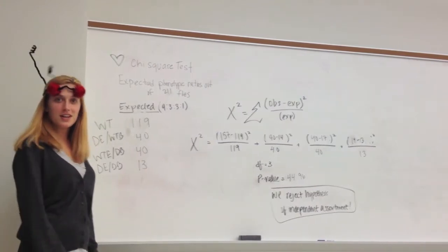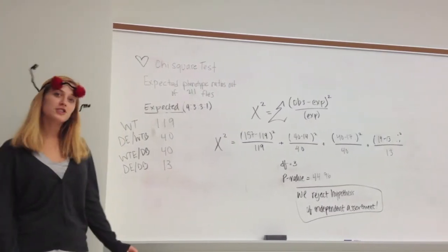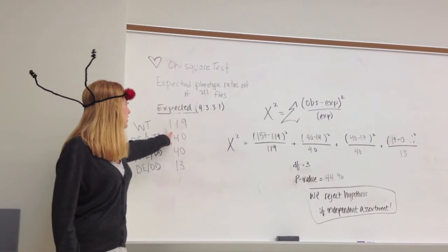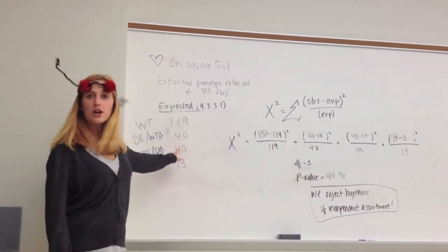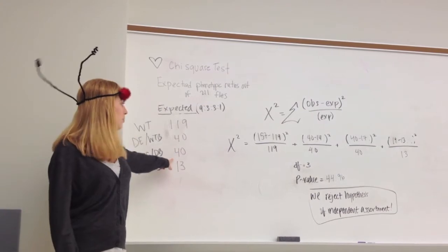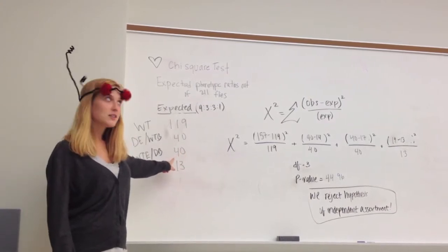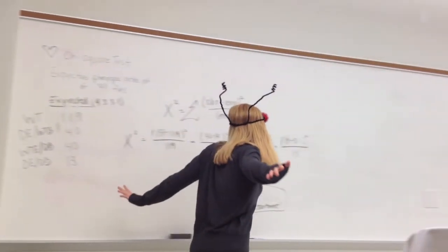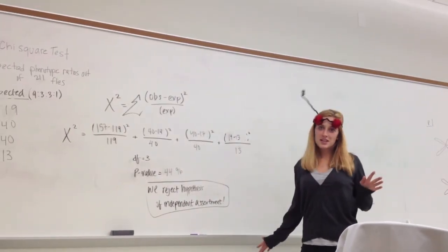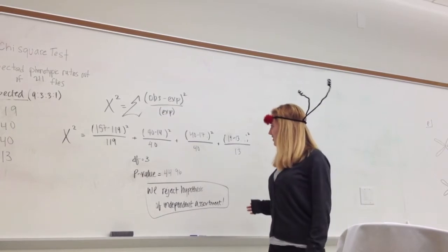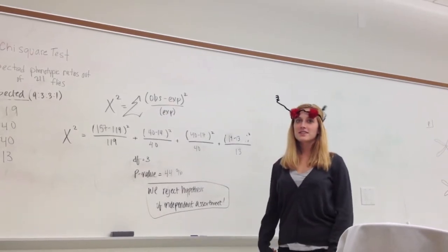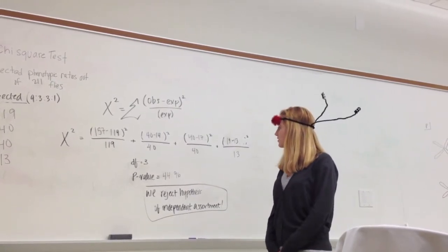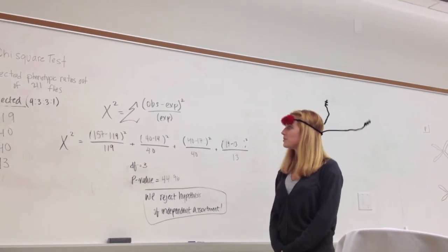For our heart chi-squared test, our expected phenotypic ratios out of 211 flies in a 9 to 3 to 3 to 1 ratio would have been 119 wild type flies, 40 dark eyed wild type body flies, 40 wild type eyed dark body flies, and then 13 dark eyed dark body flies. But that's not what our data is, so it didn't match up. And we got a p-value of 44.96, which is not even in the book. So we rejected our hypothesis of independent assortment again.